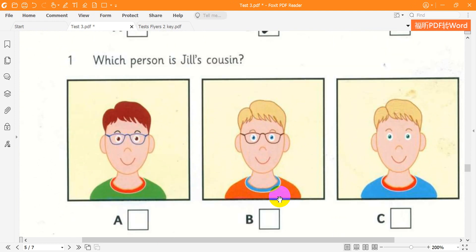Question 1. Which person is Jill's cousin? Who did you go with? My cousin, Ben. Oh yes, I know Ben. He's got brown hair and glasses, hasn't he? He wears glasses, but his hair's blonde.